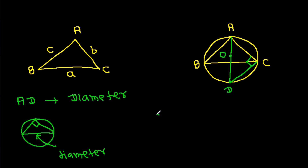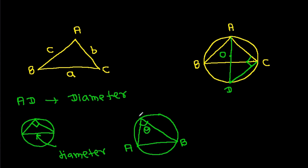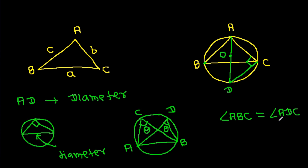Also, in any circle, from any chord AB, if it is making an angle of theta at point C, then it will make an angle of theta at any other point D as well. So here, chord AC, angle ABC is making an angle of theta at point B, and it will also make an angle of theta at point D. So angle ADC will also equal theta.